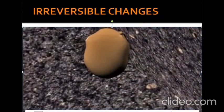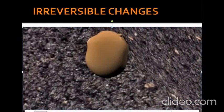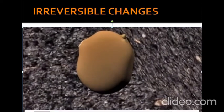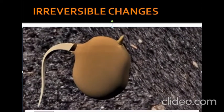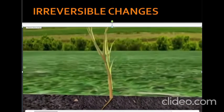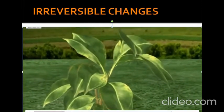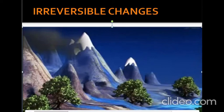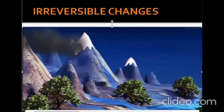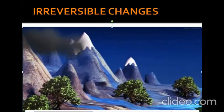Do you know how seeds grow into trees by the process of germination? Or how snow melts and the water flows into the river? These are considered changes that take place around us all the time.